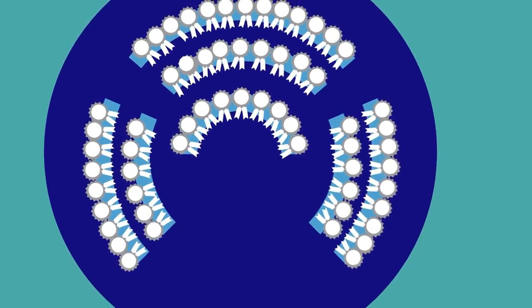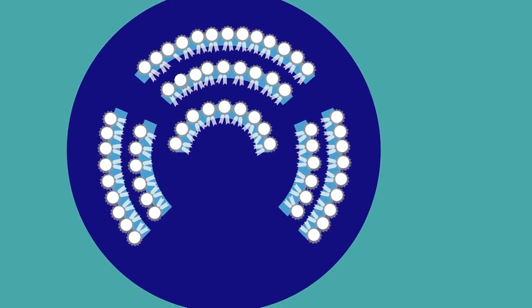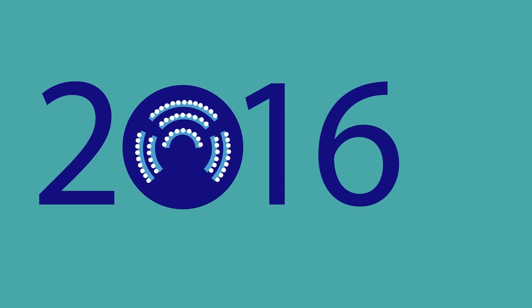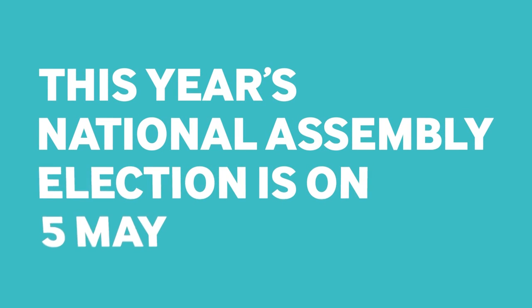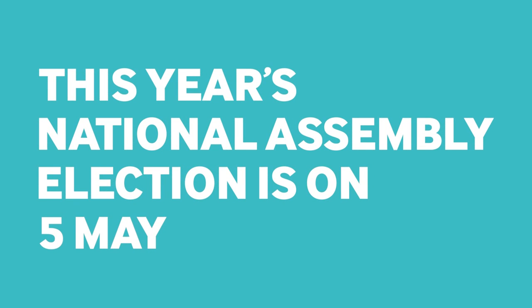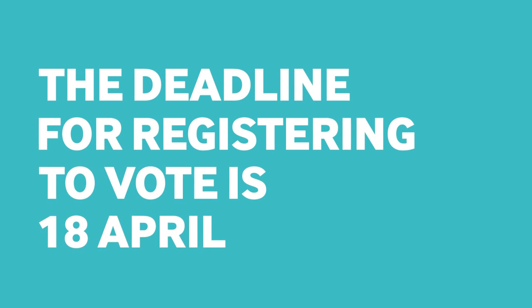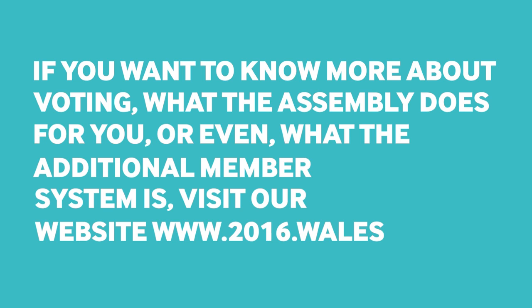And remember, these 60 Assembly members will be making laws and decisions in Wales, for Wales, for the next five years. This year's National Assembly election is on the 5th of May. The deadline for registering to vote is the 18th of April. If you want to know more about voting, what the Assembly does for you, or even what the additional member system is, visit our website: www.2016.wales or ifactwales.